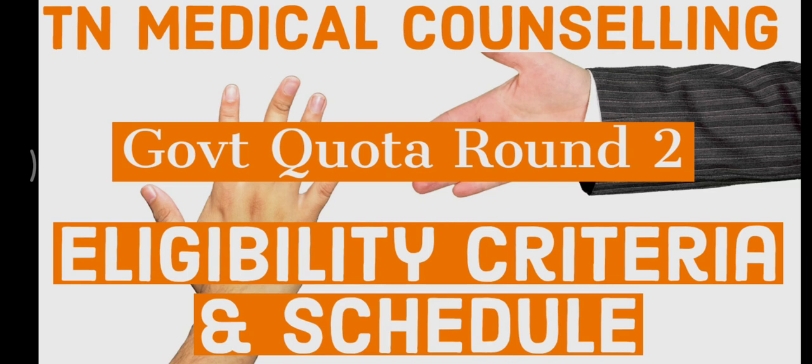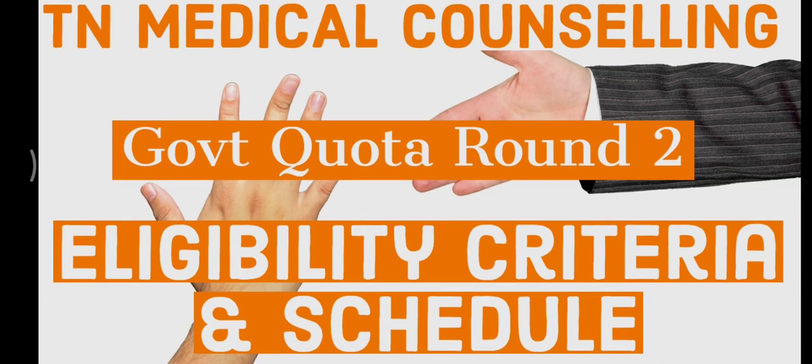If you have category A, you can choose Government Medical in round 2 and you can join. In round 1, Government Colleges, you can join. But if you have a better category college, you can choose options. If you have a category in three groups, you can select.